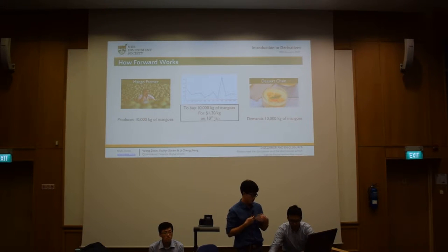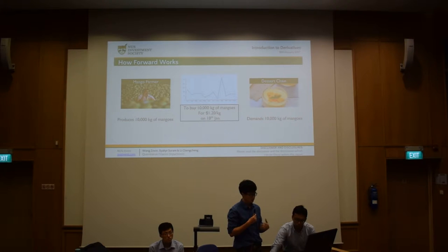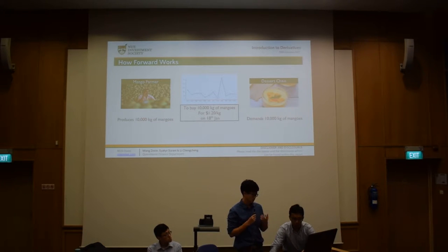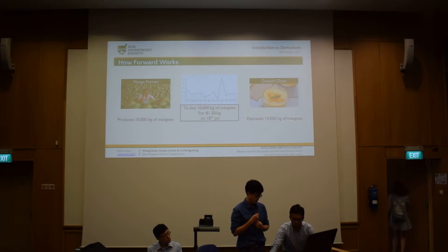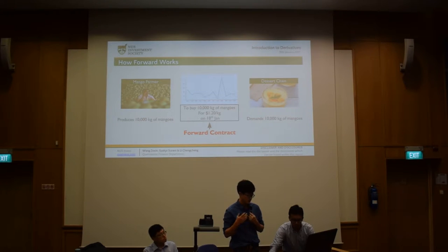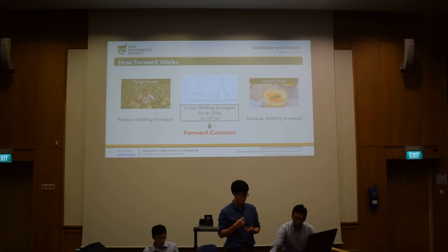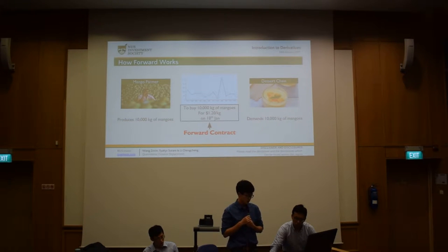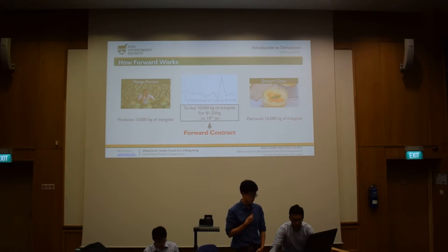This arrangement is good for the dessert chain because they can now make a decent profit, and it's also good for the farmer because they can cover costs and pay the bills. What they've set up — 10,000 kilos of mangoes for delivery on the 18th of January at a specified price — is what we call a forward contract. Both parties are obligated to transact on that date: the farmer must deliver 10,000 kilograms of mangoes, and the dessert chain must provide $12,000, allowing both to avoid volatility.